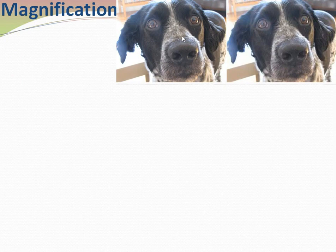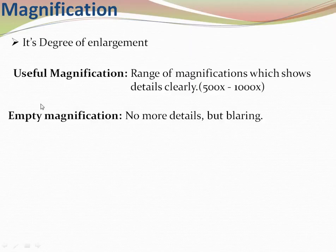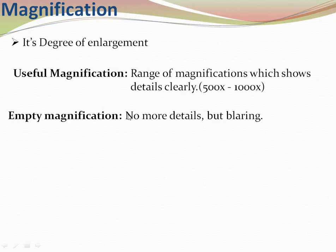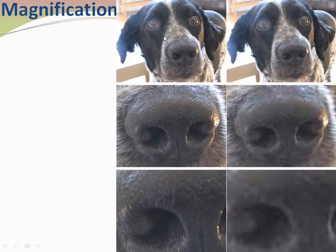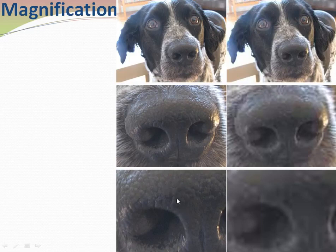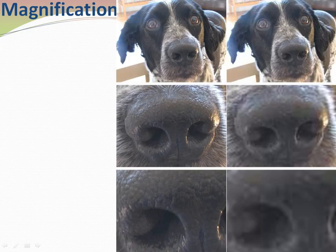Magnification is the degree of enlargement. There are two terms: useful magnification and empty magnification. Useful magnification is the range of magnification that shows detail clearly. Empty magnification is when we cannot see more detail and blurring of the image occurs. In the images shown, the first few show increasing detail clearly — that is useful magnification — while on the right side, magnifying further produces only blurring, which is empty magnification.